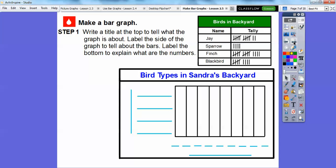Then we'll label the sides of the graph to tell about the bars. Over here is going to be the bird types. We're just going to put these right here: the jay, the sparrow, the finch, and the blackbird going down here.